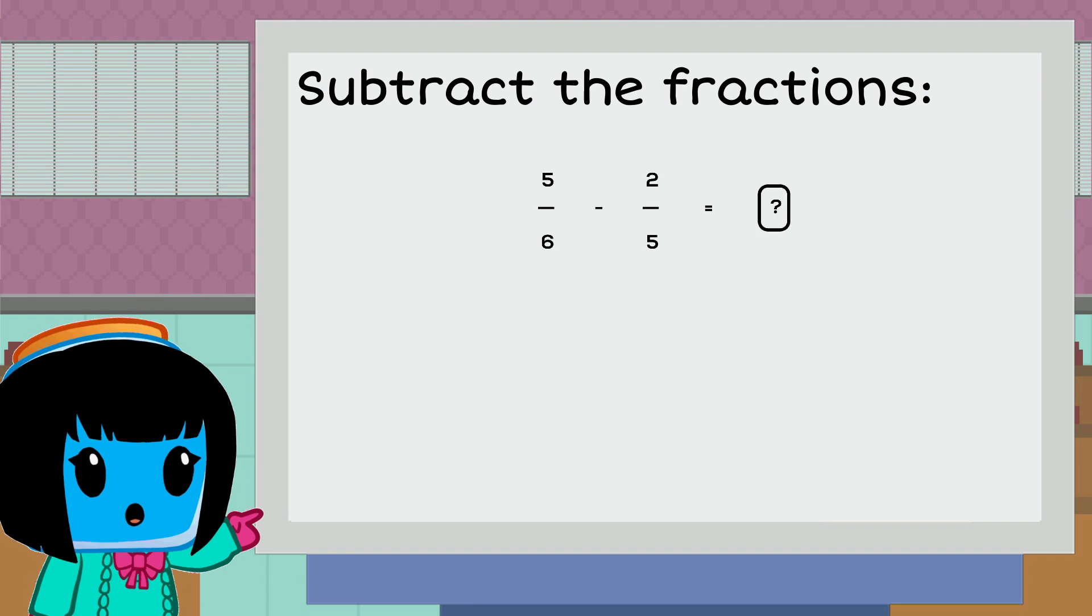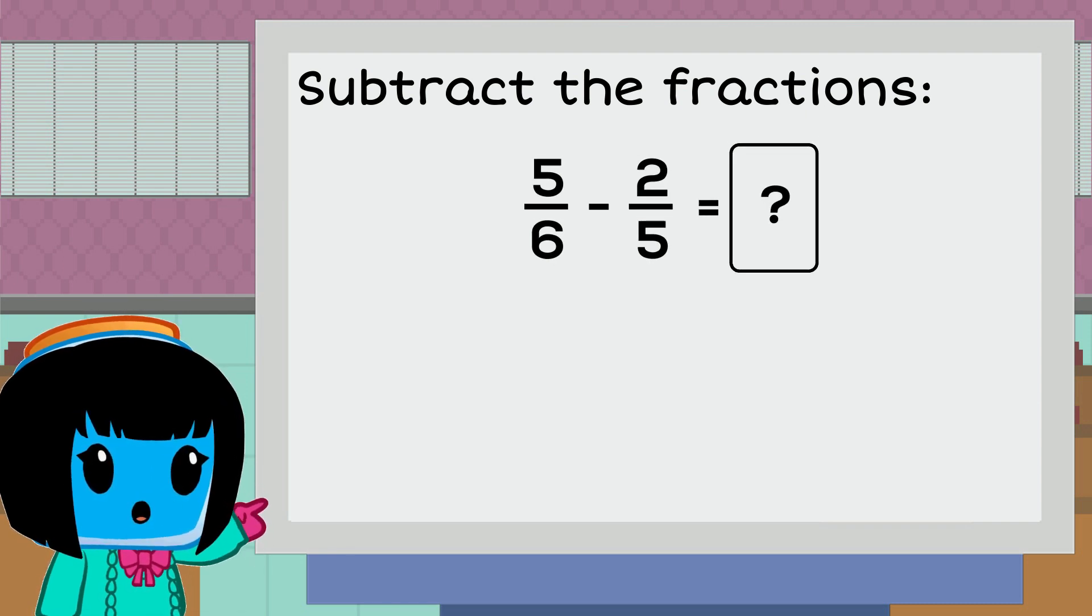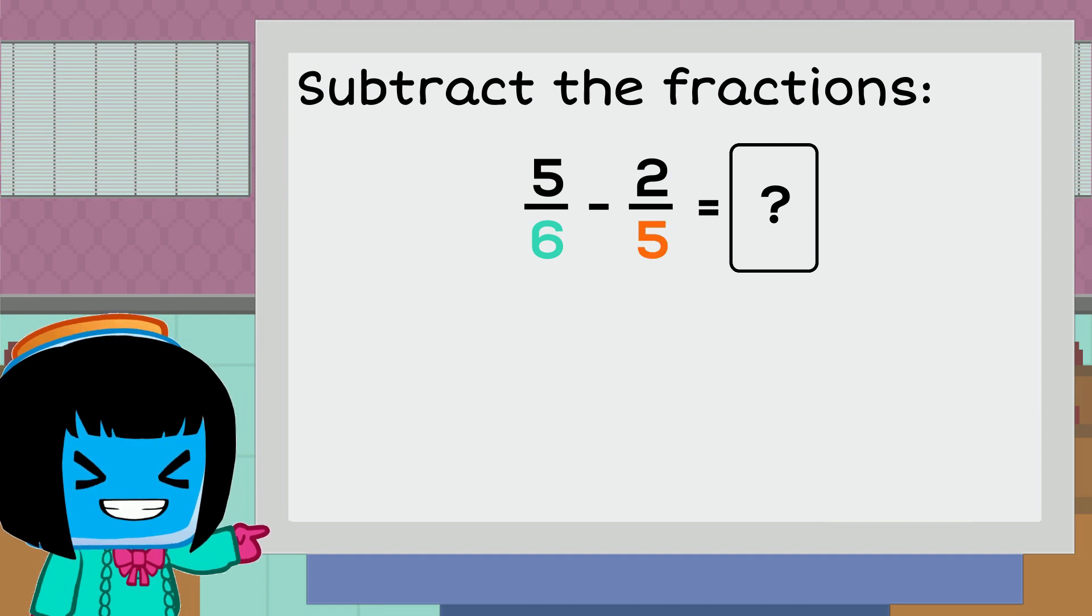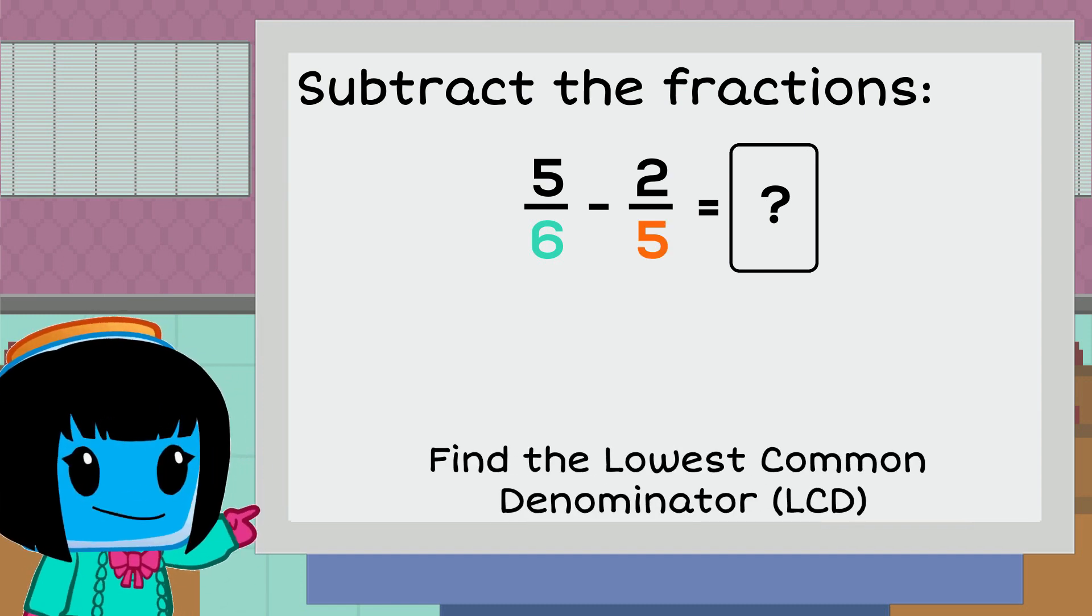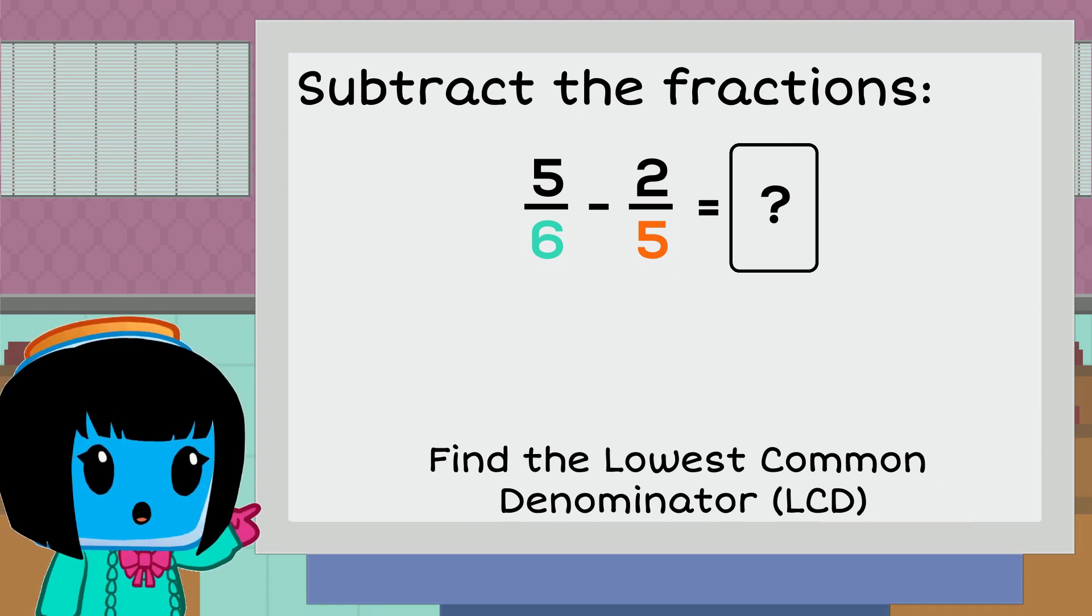Let's look at the first example. In this example, we have a denominator of 6 and a denominator of 5. So what we want to do is find what's called the lowest common denominator or the lowest common multiple of 5 and 6.